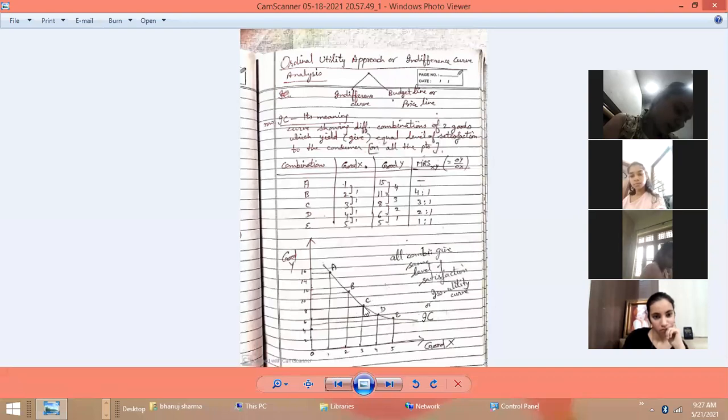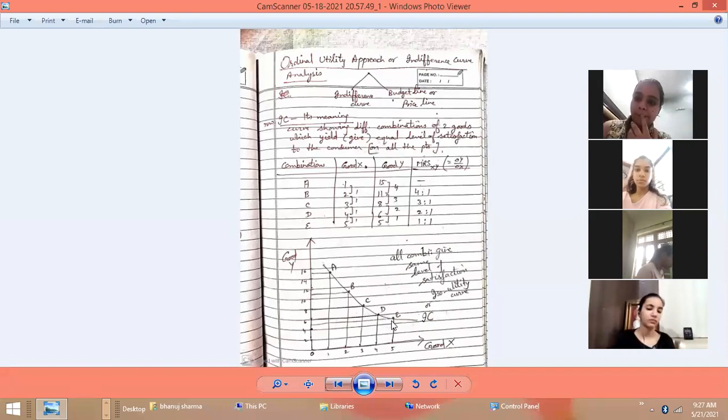If we use A combination, whatever satisfaction we get - the same level of satisfaction we will receive if we use B combination. If we take B, meaning 2 units of X and 11 units of Y, we get the same satisfaction. Whether we use C, D, or E combination, same level. The consumer is indifferent among all these combinations.